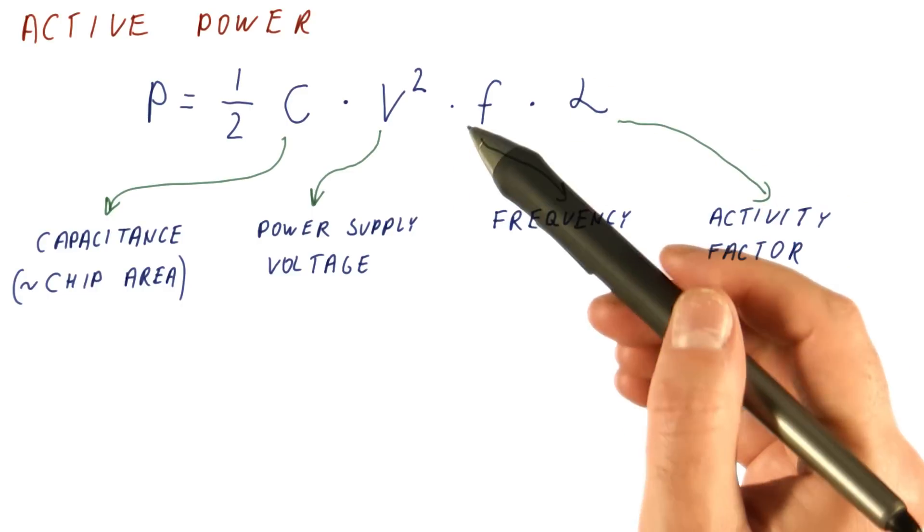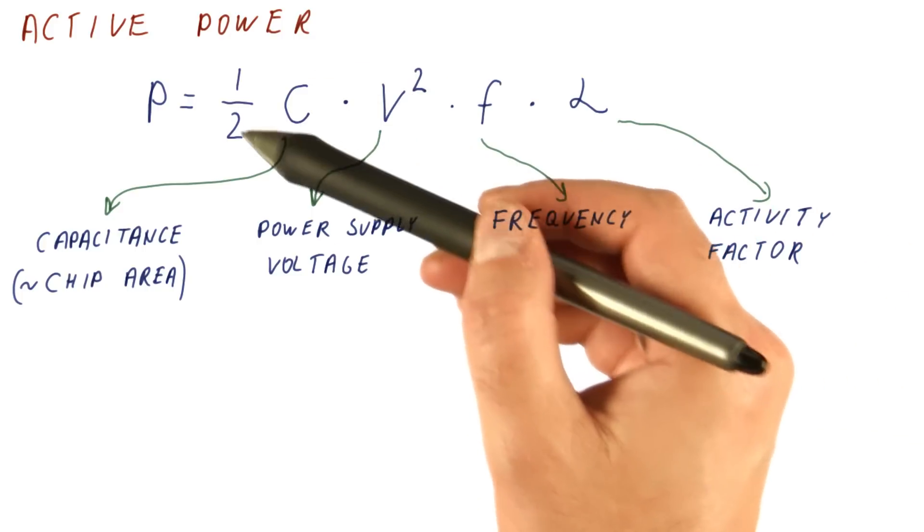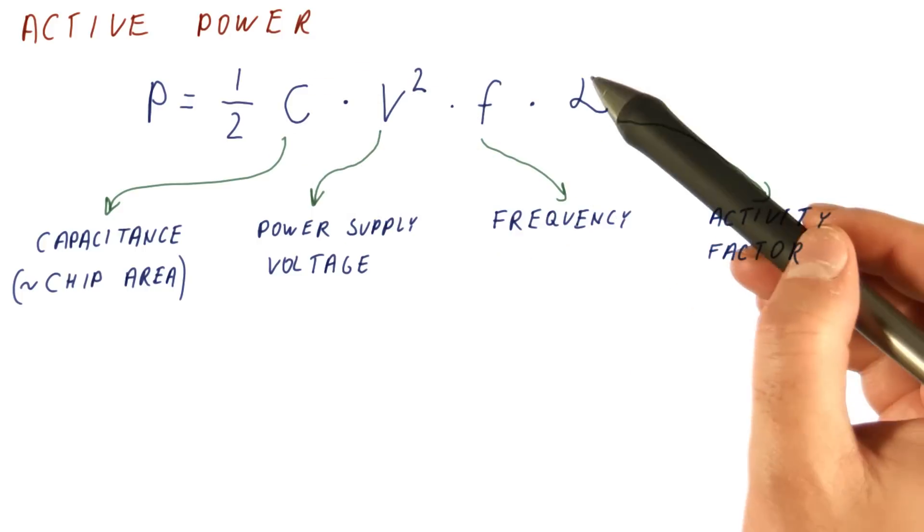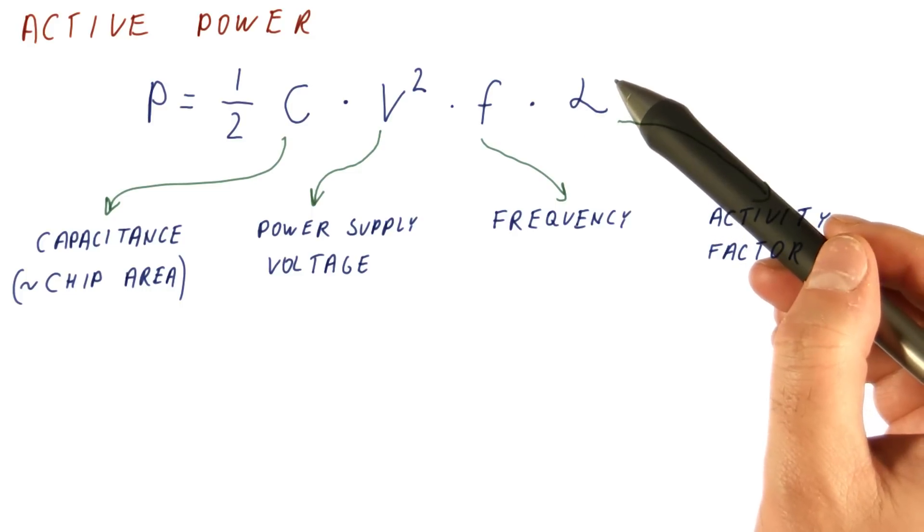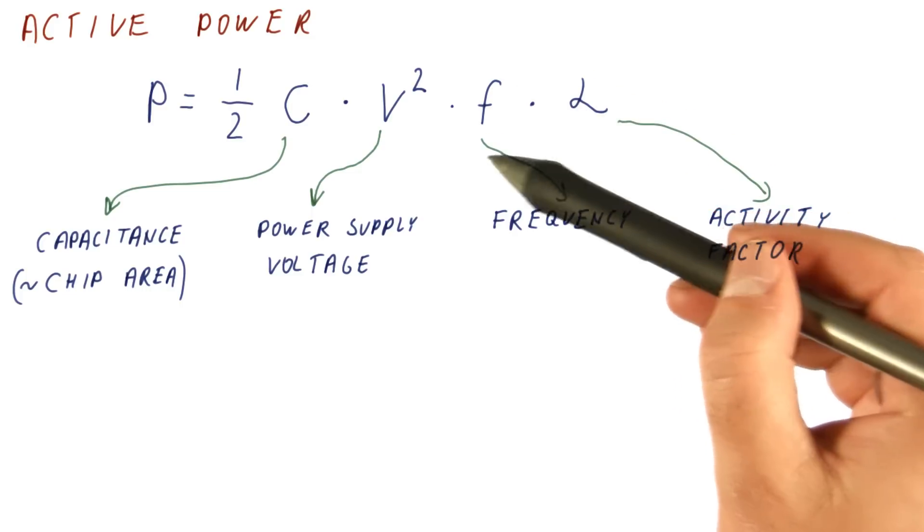Without this alpha, we are assuming that the processor is constantly switching every clock cycle, all of its transistors. So alpha really says that, for example, only 10% of the processor's transistors are actually active in any given clock cycle.